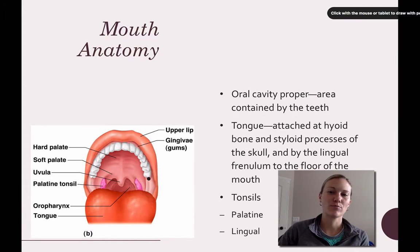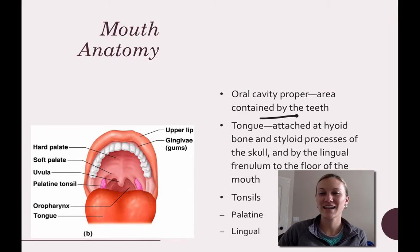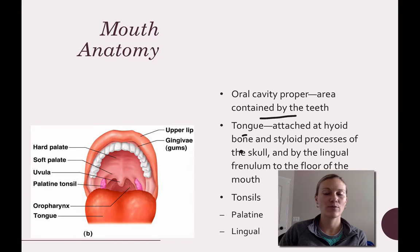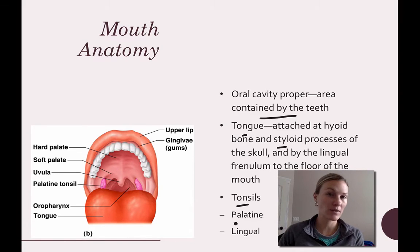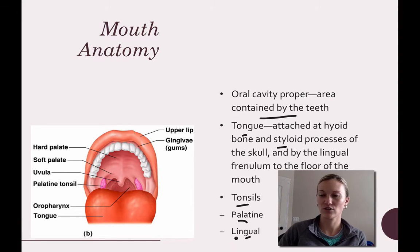The oral cavity is the proper term for your mouth, and it's contained by your teeth as well. Your tongue is attached at the hyoid bone — the only bone that doesn't articulate with another bone in the body — and also at the styloid process of the skull and by the lingual frenulum to the floor of the mouth. You also have palatine tonsils and lingual tonsils.